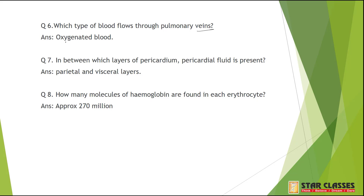Question 7: In between which layers of pericardium is pericardial fluid present? In the serous pericardium, there are two layers — parietal (upper) and visceral (lower) — and between these two layers there is the presence of pericardial fluid.